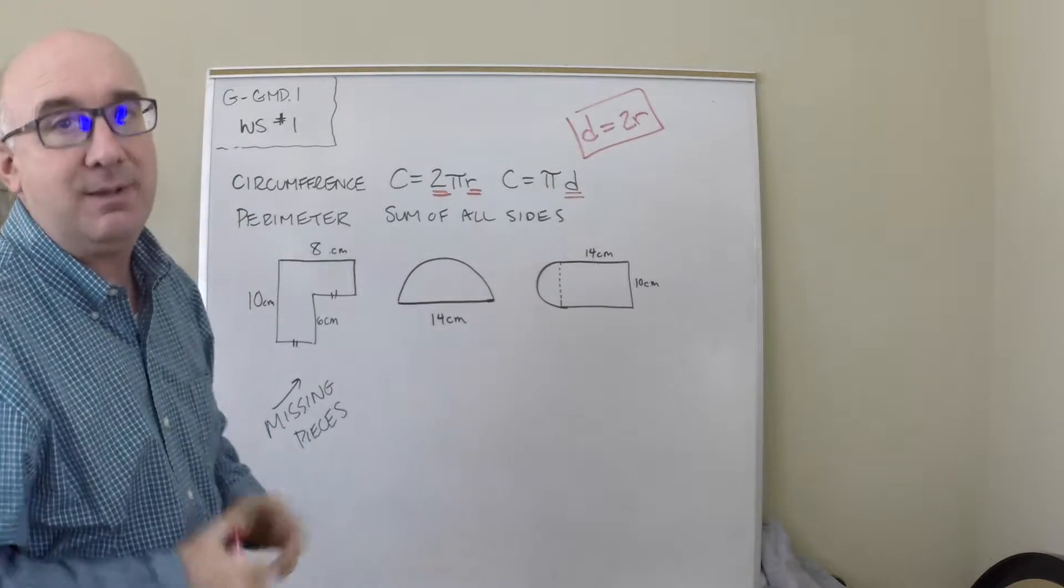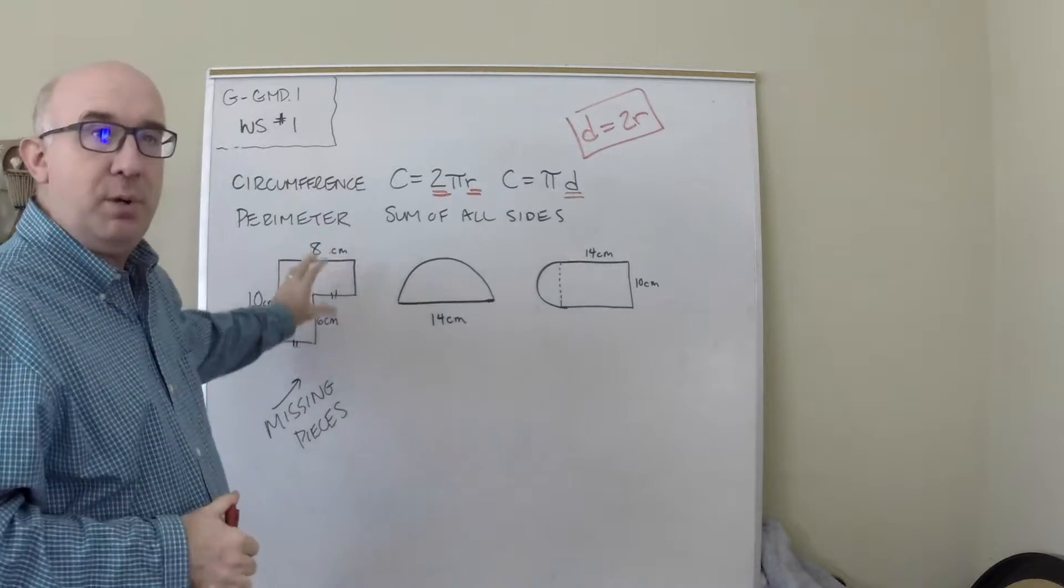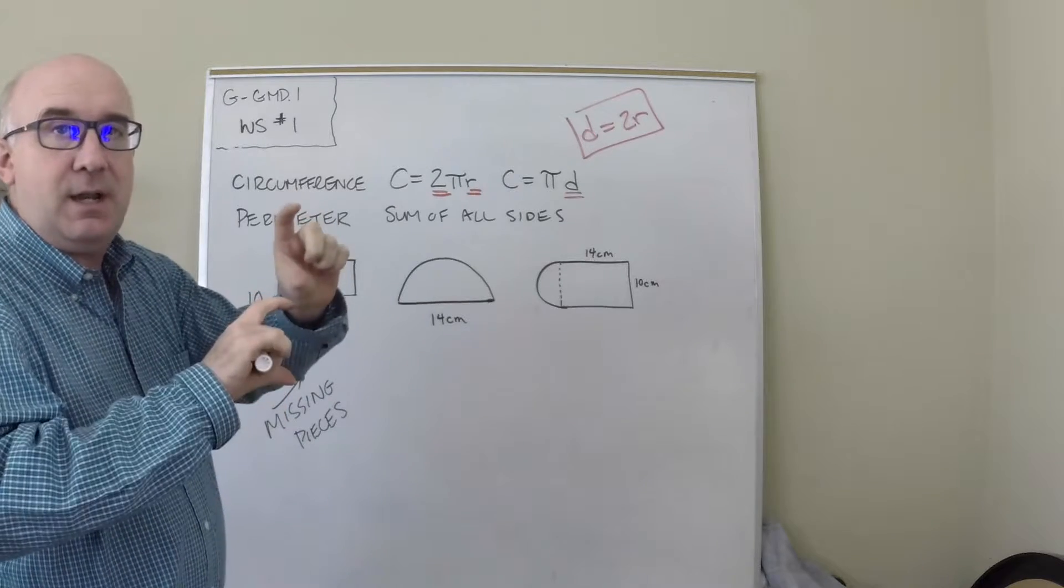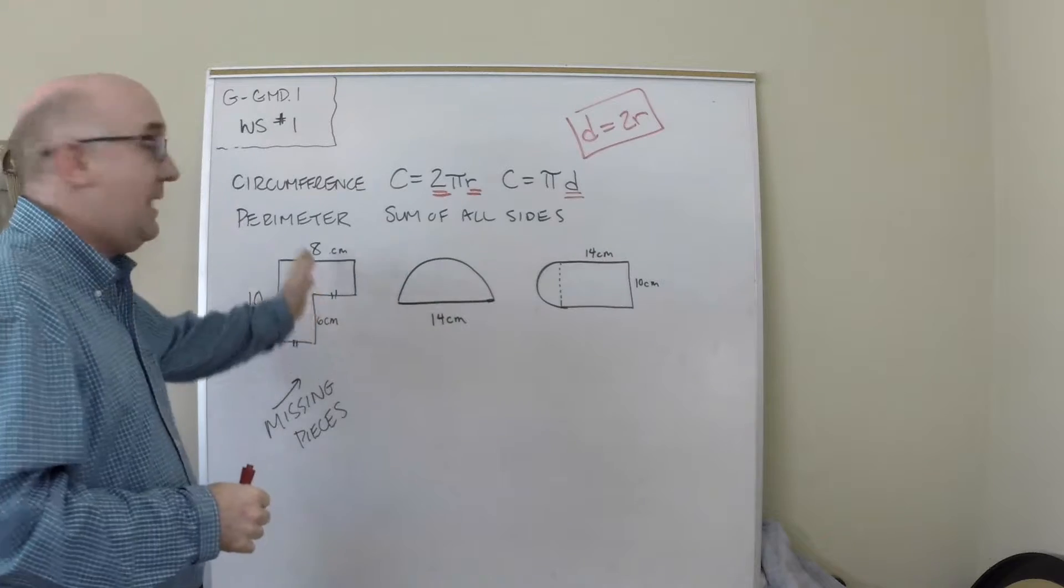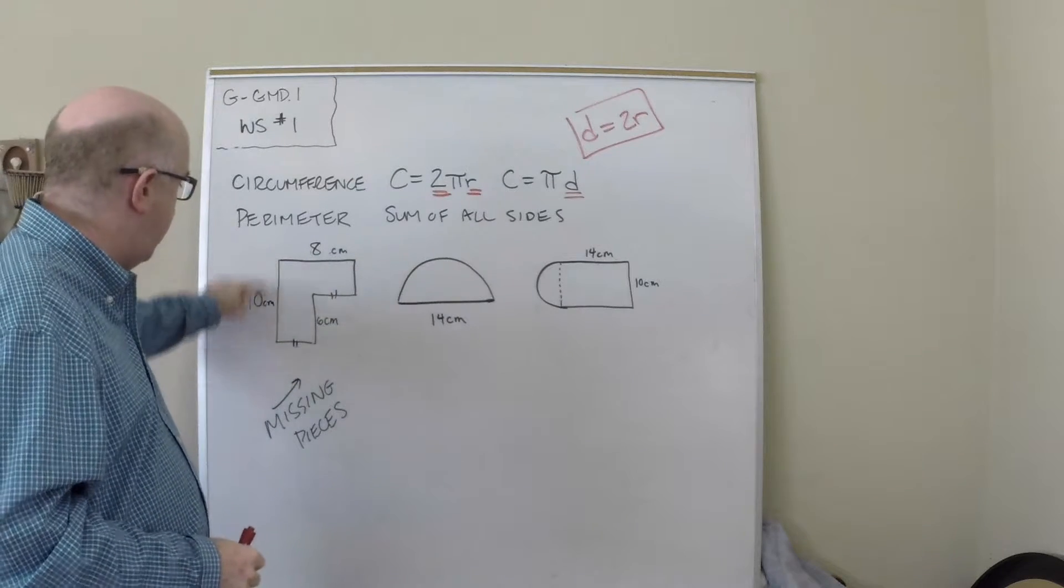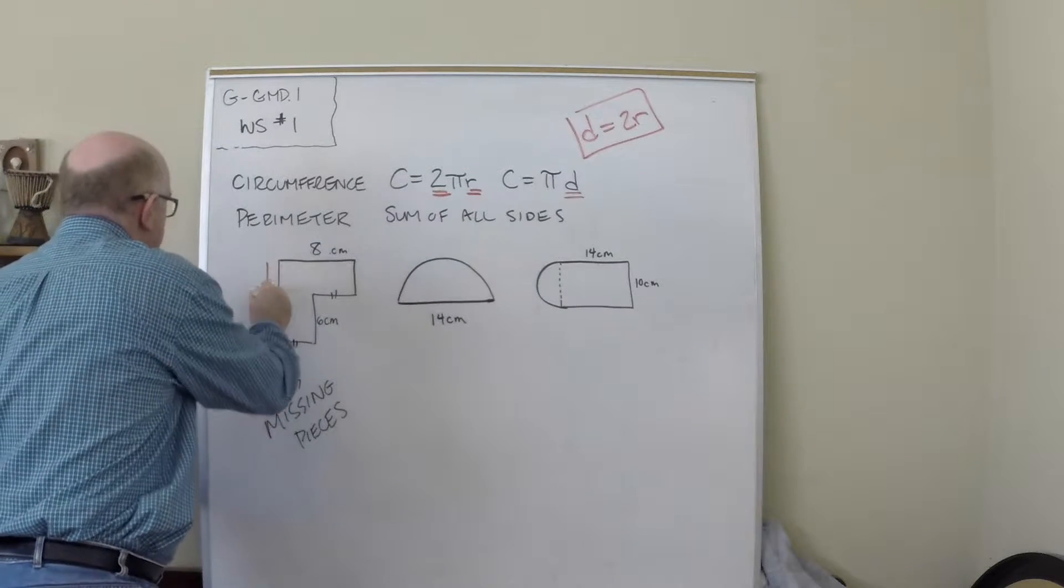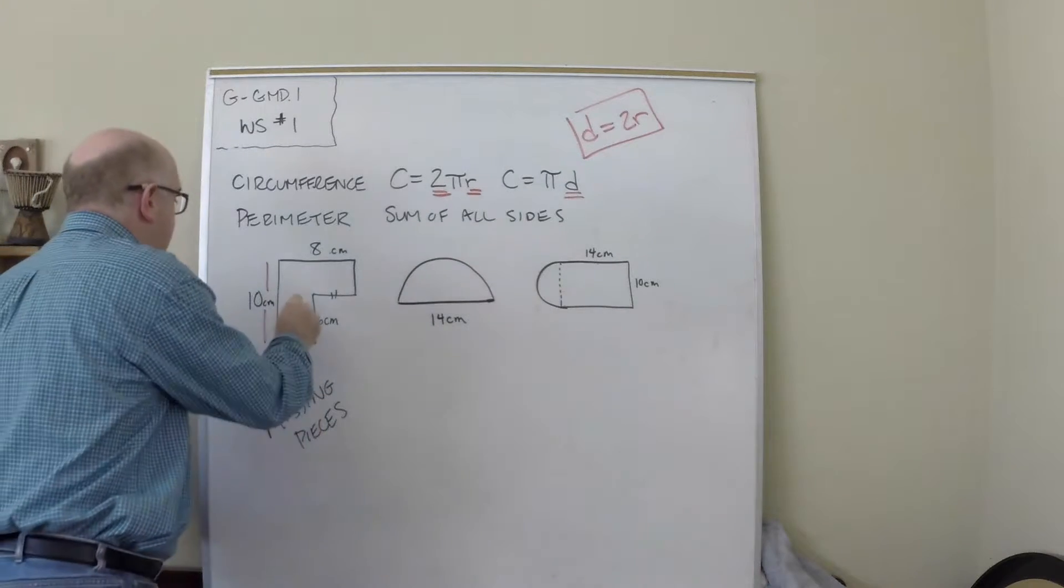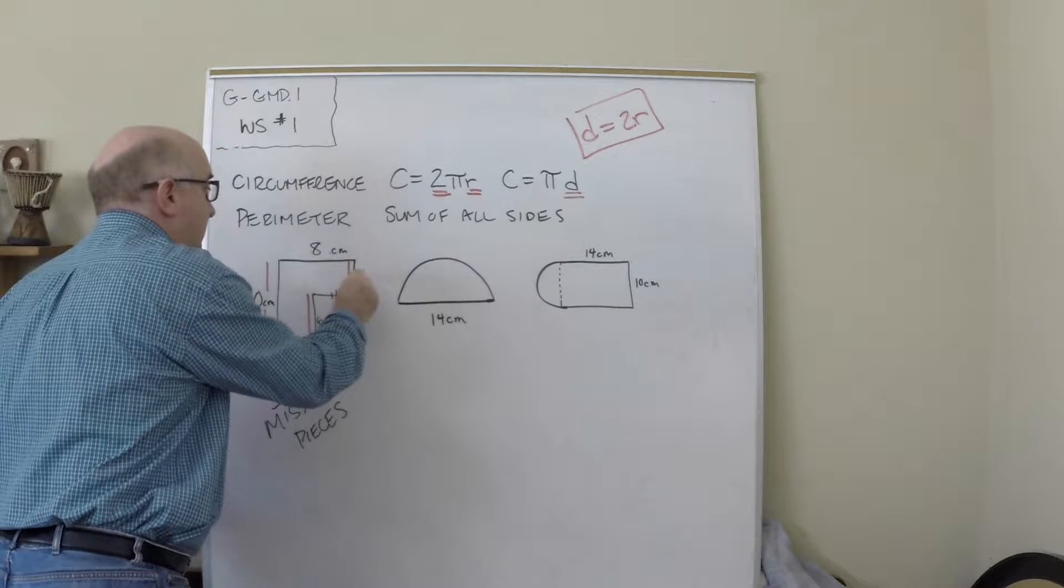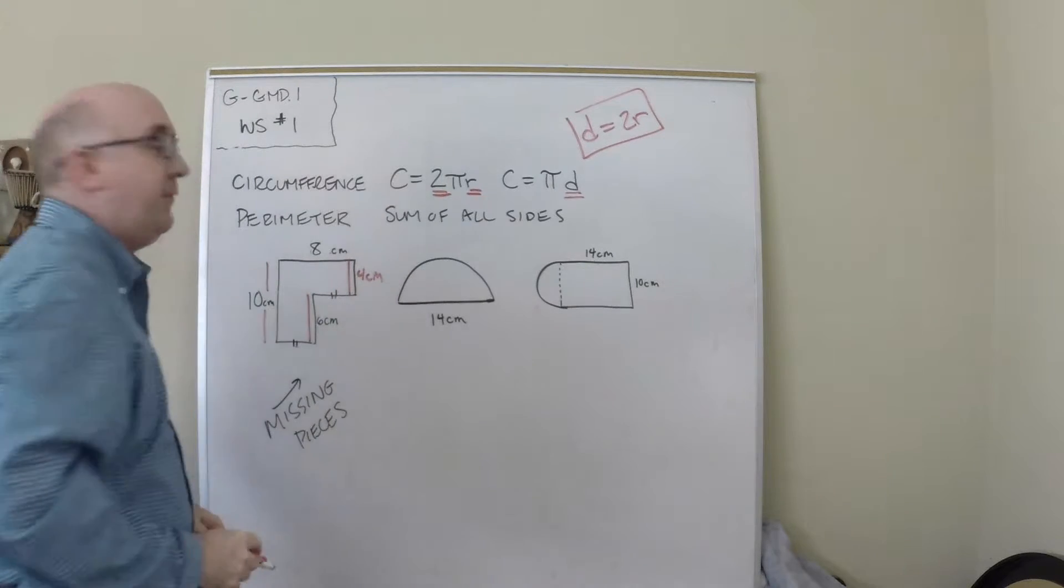Sometimes you're going to have missing lengths, and you want to use the idea of parallel pieces adding up to each other. For instance, this 10 from here to here is made up of two pieces on the other side of the shape—the 6 here and an unknown piece, so we know that has to be 4 because the 6 and the 4 add up to the 10.